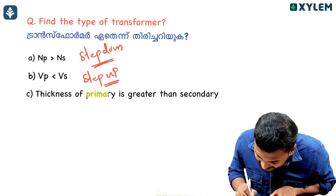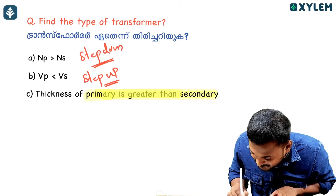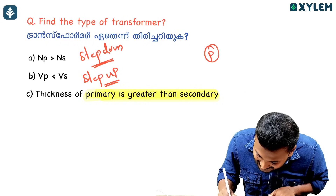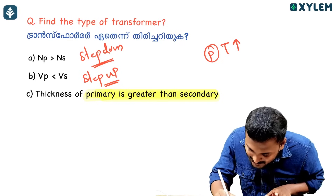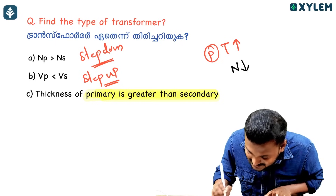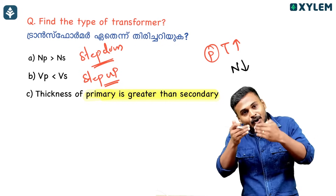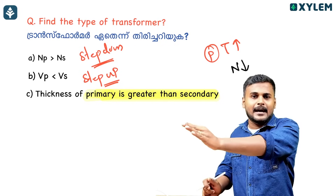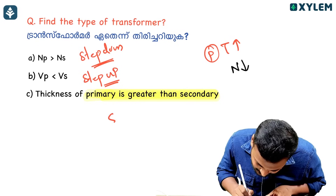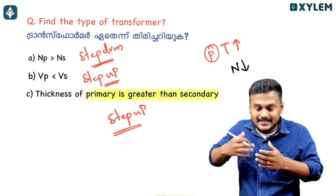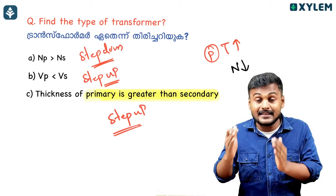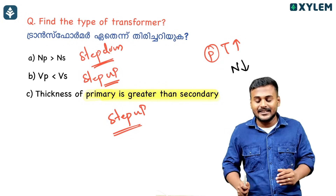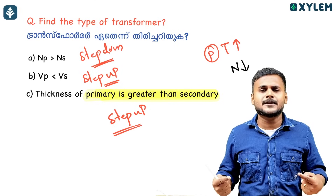If the thickness of primary is greater than secondary, you can determine the number of turns from the thickness. Primary number of turns and secondary number of turns — if you look at the number of turns, voltage, current, and thickness, you can identify the type of transformer confidently.